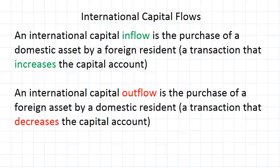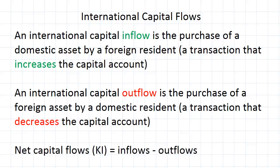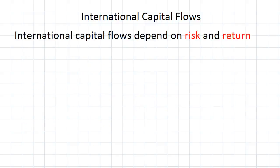What we're very interested in is the difference between the two, which we call net capital flows, represented as Ki. That's what our international capital flows are. What determines them — in particular what determines net capital flows? It boils down to two main factors: risk and return.